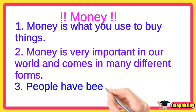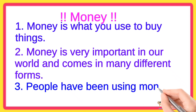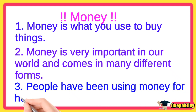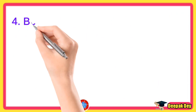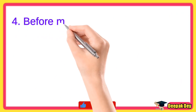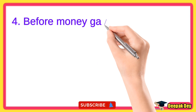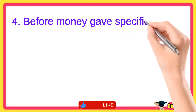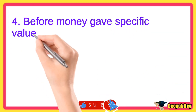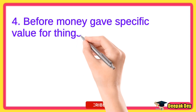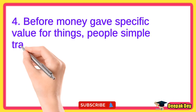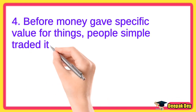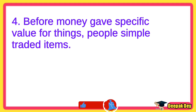Line 3: People have been using money for hundreds of years. Line 4: Before money gave specific value for things, people simply traded items.